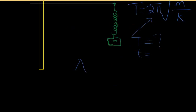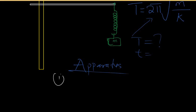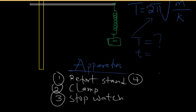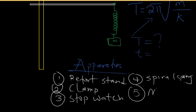For the procedure, the apparatus for this experiment includes: a retort stand, a clamp, a stopwatch, and a spiral spring of a particular spring constant, as well as masses.